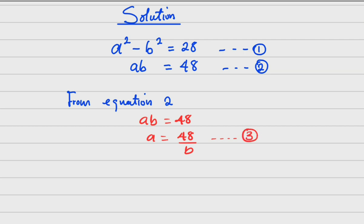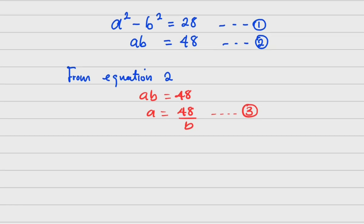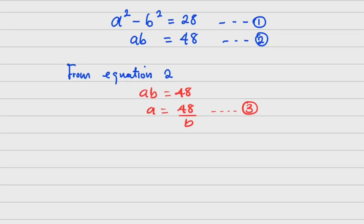This is very important — let's call it equation three. Now I'm going to substitute equation three into equation one. Substituting into equation one, instead of a² I'm going to have (48 / b)² minus b² equals 28.